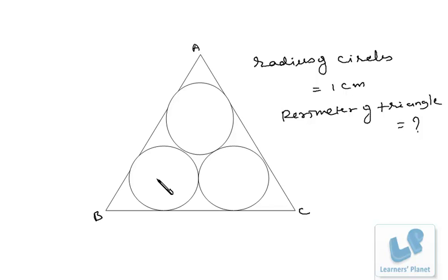Now we'll be using very basic properties of geometry. From this point if we drop a perpendicular over here, because this is a tangent it will be 90 degrees and this will be the radius, that's 1 cm.